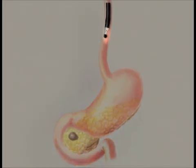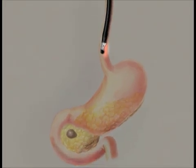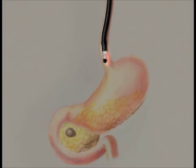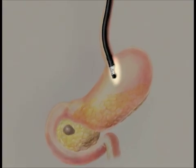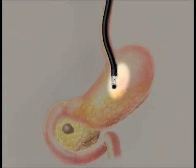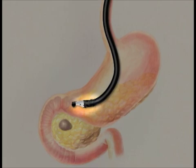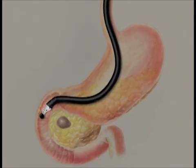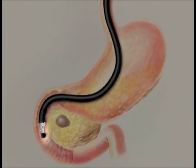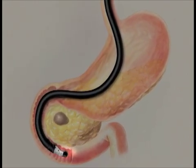The endoscope used is a slim, bendable tube with an ultrasound probe at the end. It enters through the mouth, travels down the esophagus and into the stomach. From the stomach, the endoscope enters the duodenum, or first part of the small bowel.